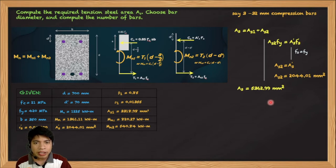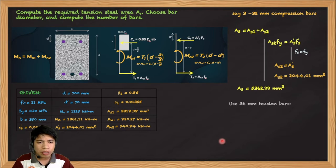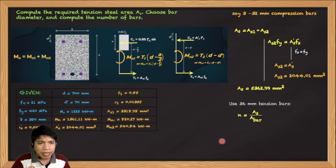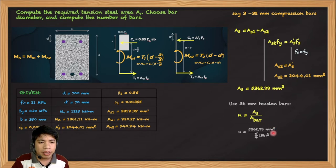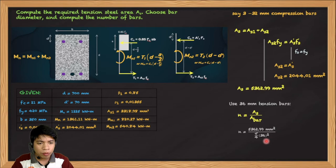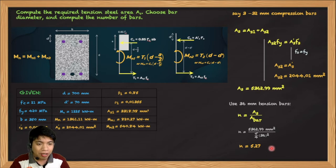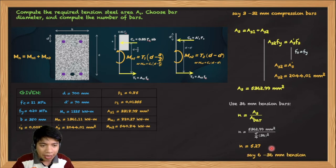Choosing 36 mm diameter tension bars, the number of bars = AS / (π/4 × 36²) = 5,362.99 / 1,017.88 = 5.27. Rounding up, we need 6 — so use six 36 mm tension bars. This completes the initial design: 3 × 32 mm compression bars and 6 × 36 mm tension bars.